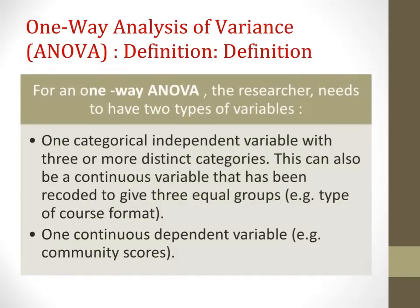For a one-way ANOVA, the researcher needs to have two types of variables. First, a categorical independent variable with three or more distinct groups — for example, the type of course format: online, blended, and residential. The researcher also needs one continuous dependent variable measured at the ratio or interval level, such as course points or a community score. Remember that in educational and social science research, Likert scale data is often treated as interval ratio data, so a sense of community score could serve as a continuous dependent variable.